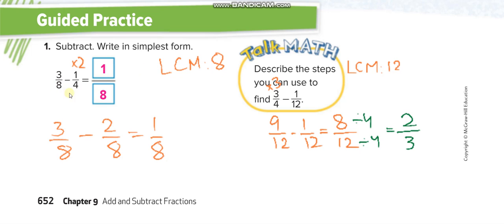For the next example, the LCM is 8, so we multiply the fraction by 2 to get 2 over 8. Then 3 minus 2 equals 1 over 8. For the following example, the LCM is 12, so we multiply by 3 to get 9 over 12. Then 9 over 12 minus 1 over 12 equals 8 over 12, and we divide by 4 to simplify, giving us 2 over 3.